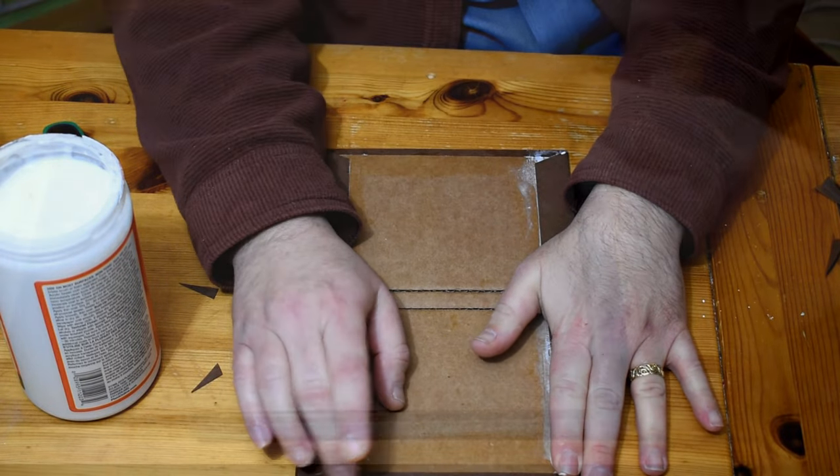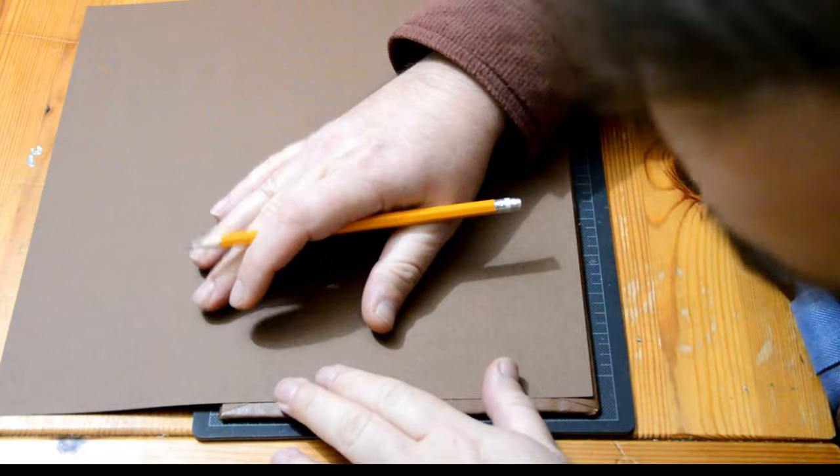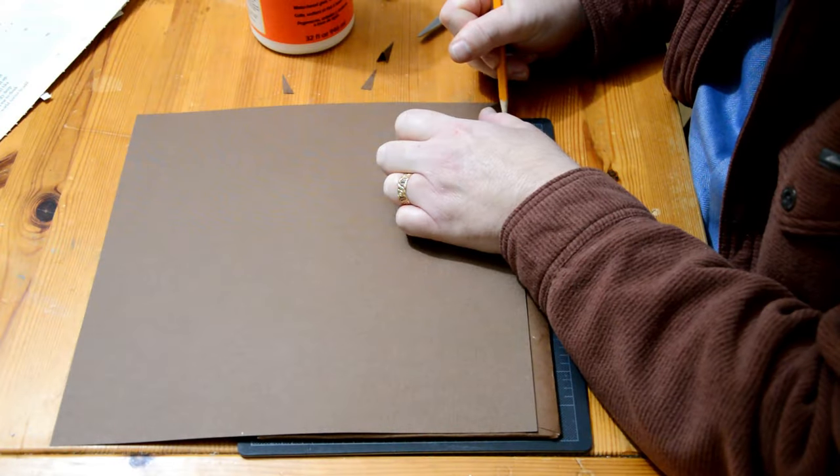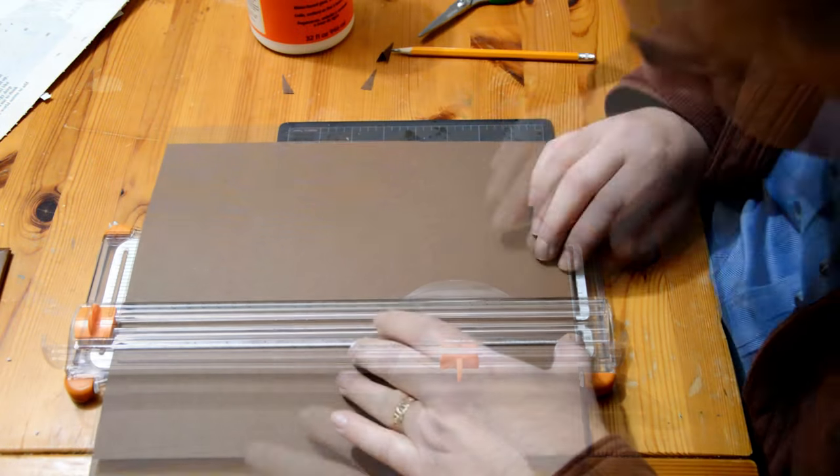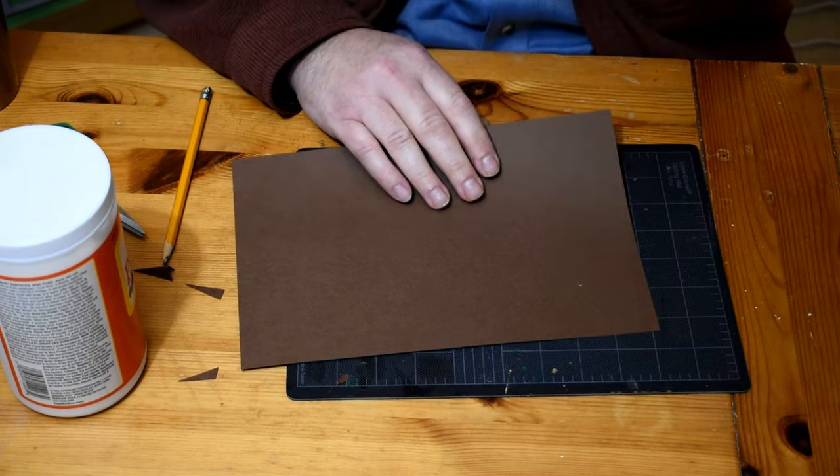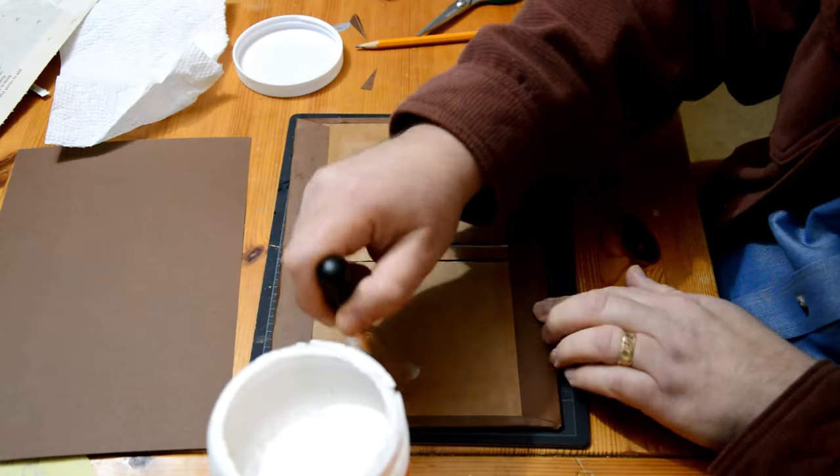Once that's dry, I can move on to the inside cover. Now I'm making that out of a contrasting piece of this 80 pound archival quality paper, and I'll use the outside cover to measure against, just to make sure I have enough of a margin so that it sits inside there, and it looks nice and neat when I'm done.